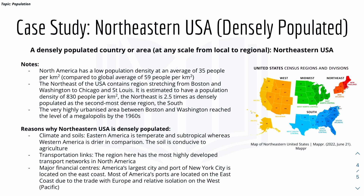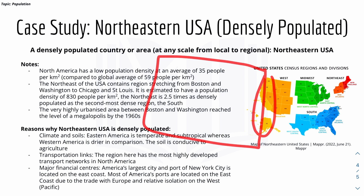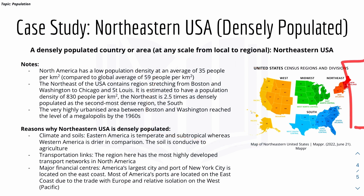Here are the reasons why the Northeastern USA is densely populated. First, good climate and soils — the temperature is pleasant compared to Western America which is drier, and the soil is fertile for agriculture, encouraging people to farm and settle. Second, transportation links — this region has the most highly developed transport networks in North America, built to serve its important cities. Third, it is a major financial center: America's largest city and port, New York City, is on the East Coast, and most of America's ports are on the East Coast due to trade with Europe.